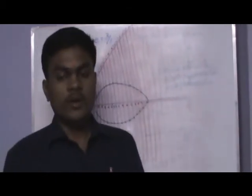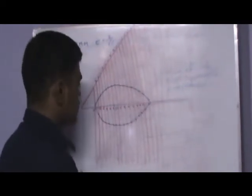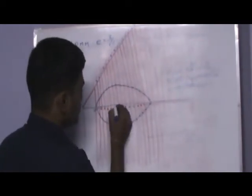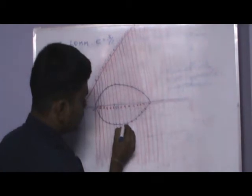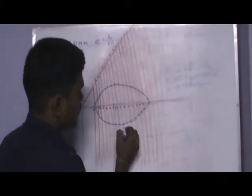To draw a tangent and normal, small steps to follow. The first step is take any point on the outer surface of the ellipse and mark it as P.